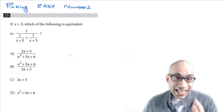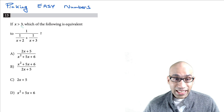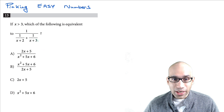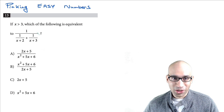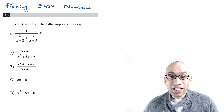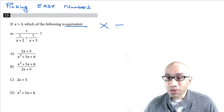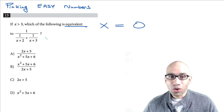In this real SAT problem, you're given this intimidating expression and asked which of these answers is equivalent to it. Anytime you see this word 'equivalent,' just set x equal to 0.